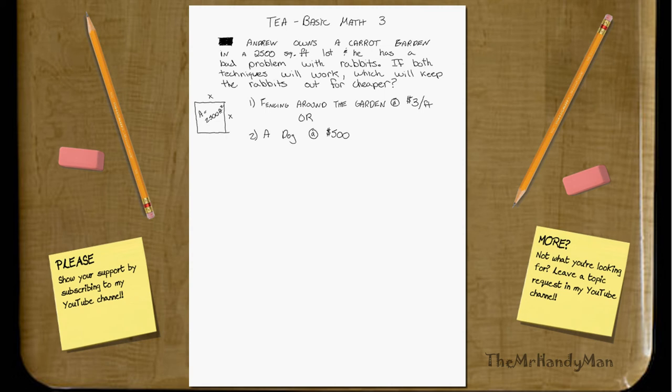If both techniques will work, which will keep the rabbits out for cheaper? The first option is fencing around the garden at $3 per foot, or a dog at $500. Sounds expensive.